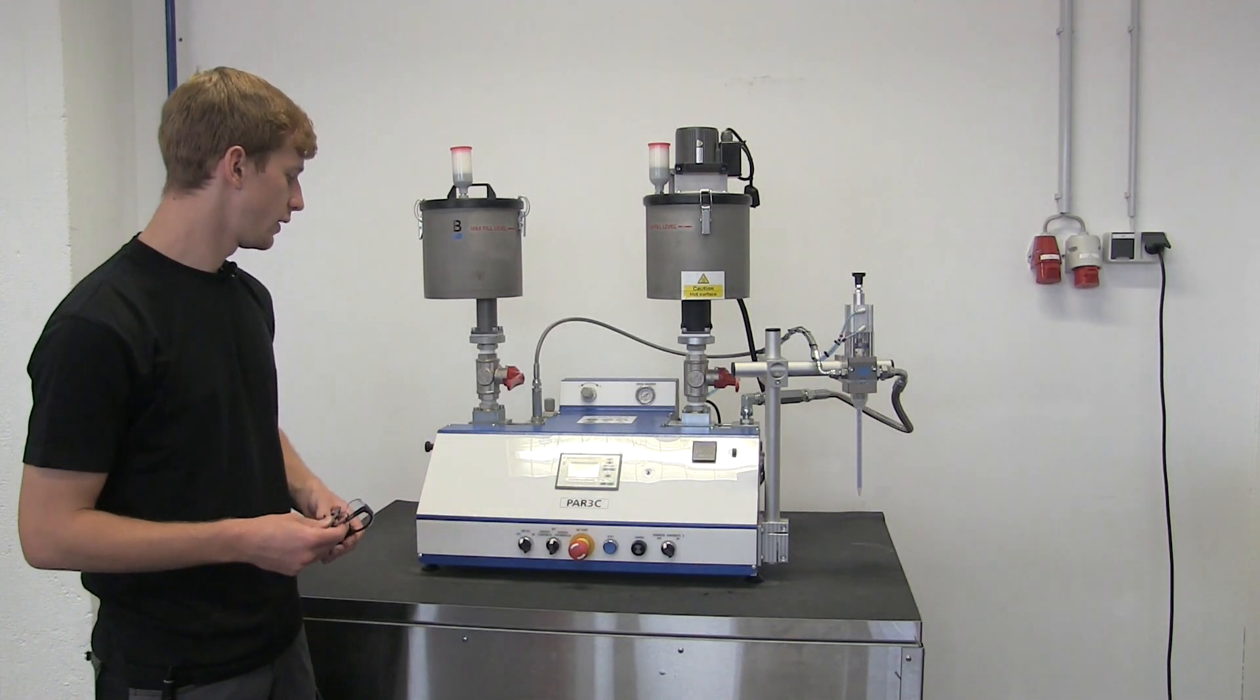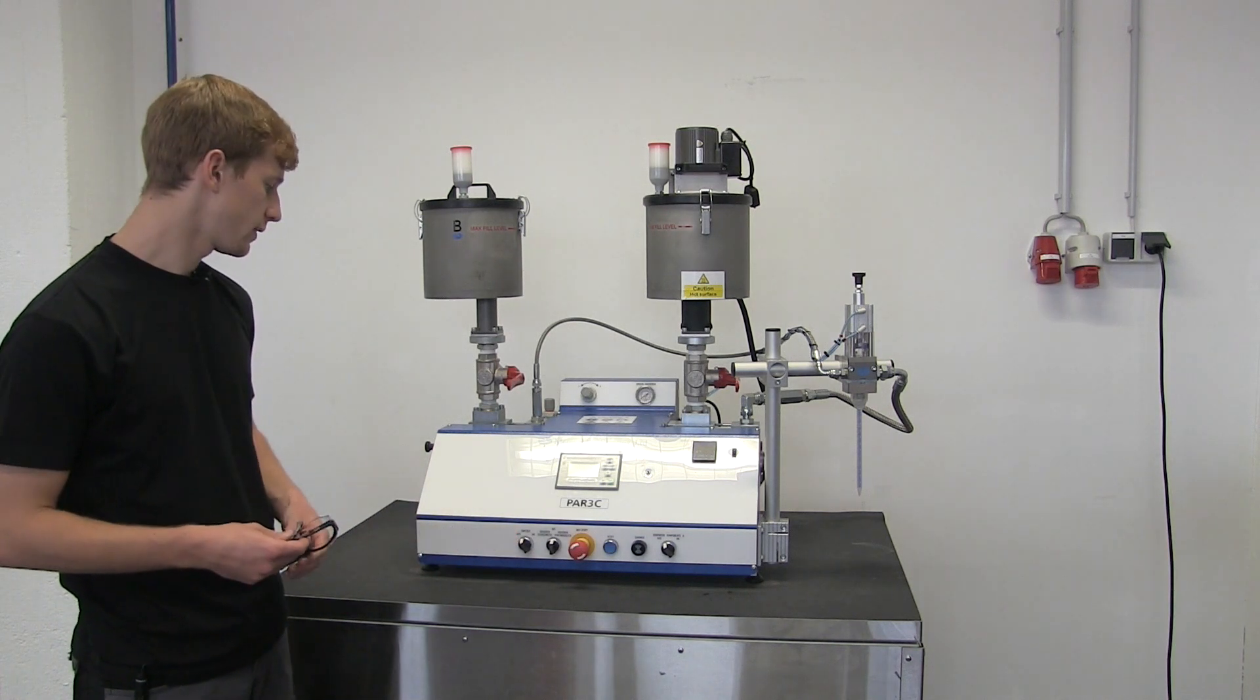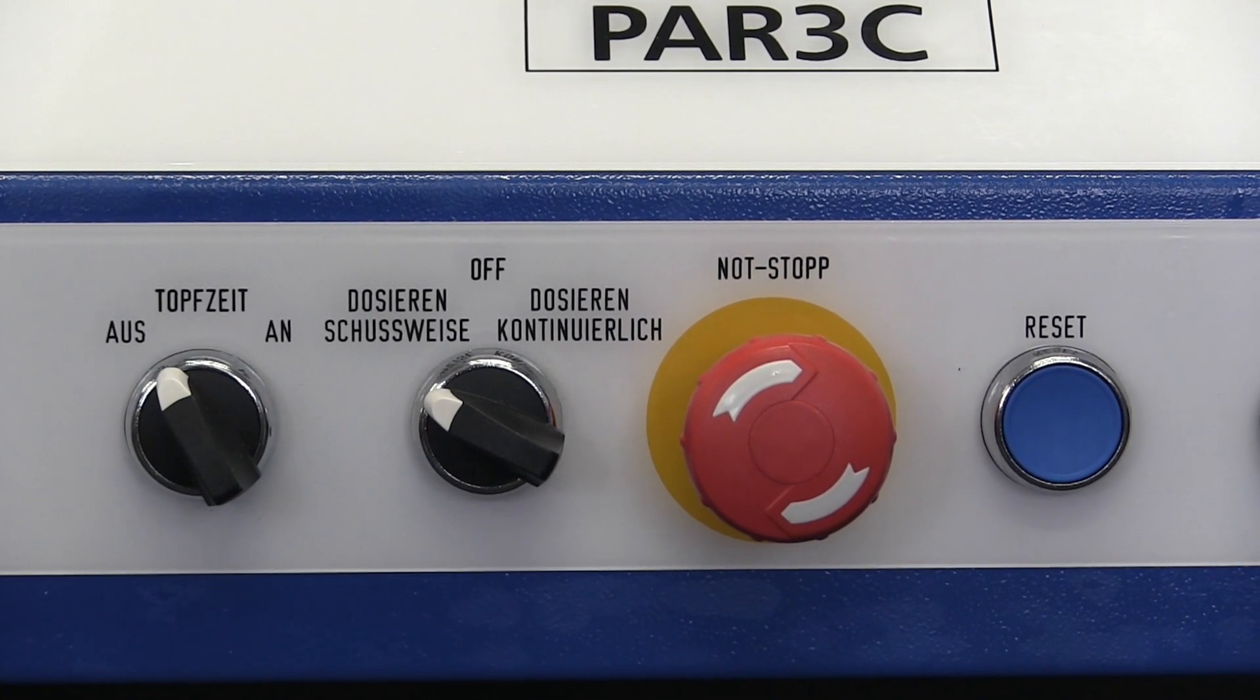The selector switches give you functions such as enabling or disabling the pot life or what kind of metering you want to perform, for example continuous or shot by shot.